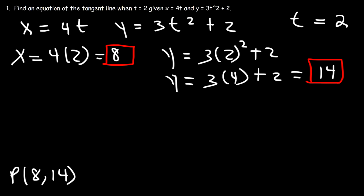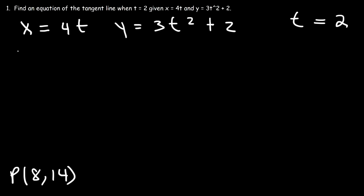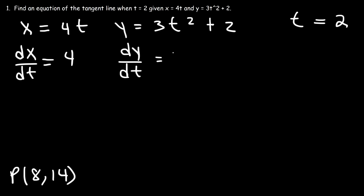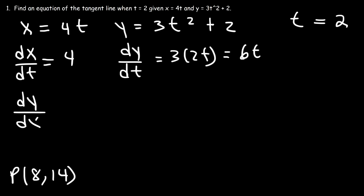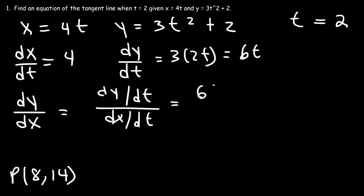The next thing we need to do is calculate the slope. Let's find dx/dt and dy/dt. The derivative of 4t is 4. The derivative of t squared is 2t, and the derivative of 2 is 0, so dy/dt is going to be 6t. Now we can determine dy/dx — that's dy/dt divided by dx/dt — so that's 6t over 4. We can reduce that to 3t over 2 by dividing 6 and 4 by 2.